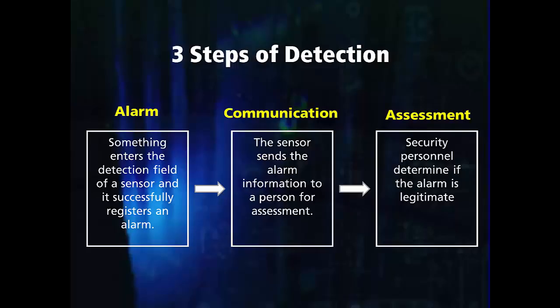The first step requires an alarm to be activated. Typically, this will be from someone or something entering into a sensor's detection volume. This alarm then must be communicated so that a person can judge whether the alarm was caused by an intrusion or not. The communication can be audible, where security personnel go to the site of the alarm and assess the situation, or can involve an alarm assessment system. Typically, facilities will have a central alarm station where a tripped alarm will activate a camera that covers the same area and allows security personnel to remotely determine the cause of the alarm.